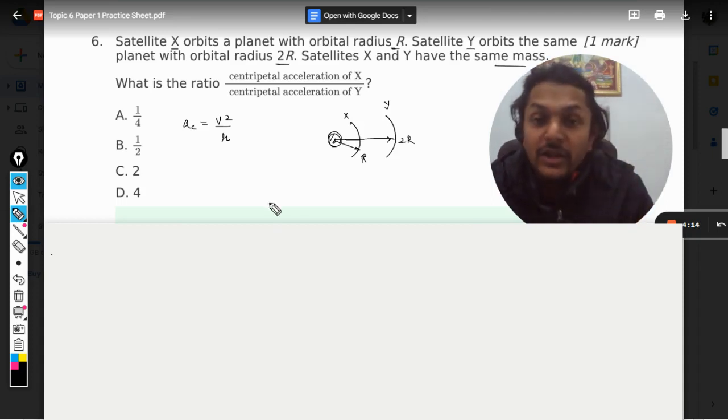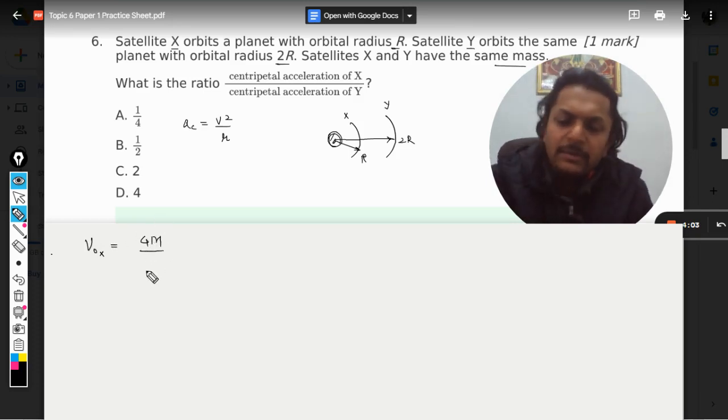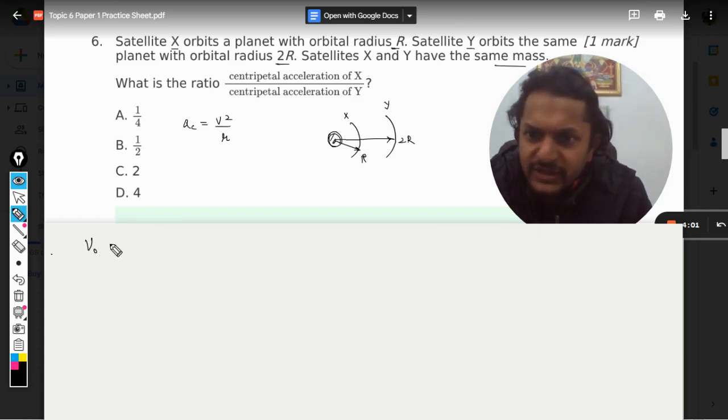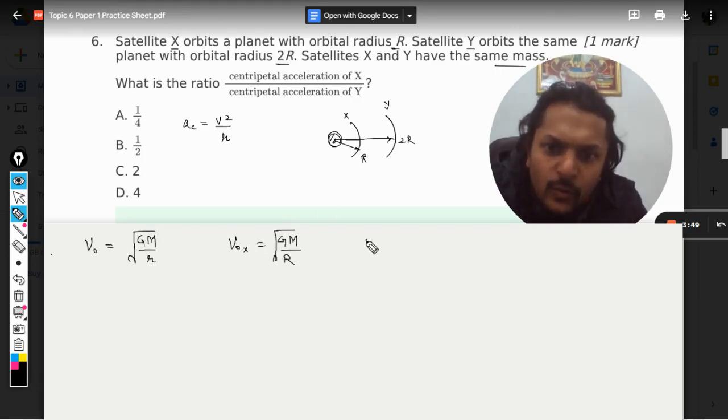So what is the formula for the orbital speed? For X it will be GM divided by r. I'm just giving you the general formulation for this. Now it will be GM by r square root. Now let us go for X first of all. We now substitute the values. This will be taken as r, and what is v not y? This will be GM divided by 2r.